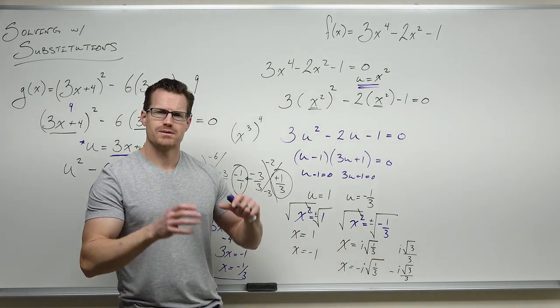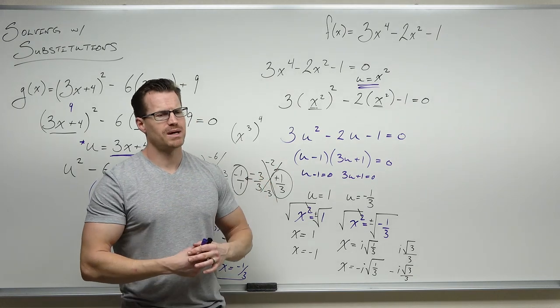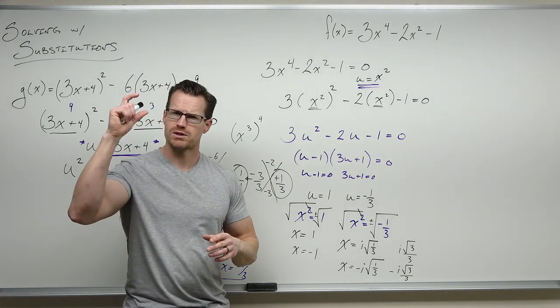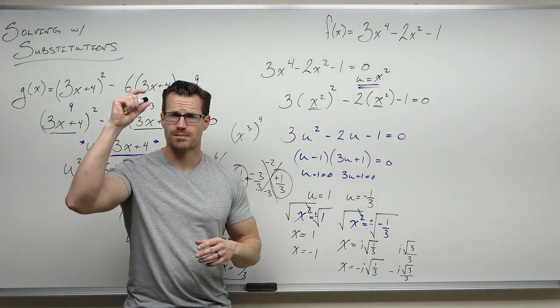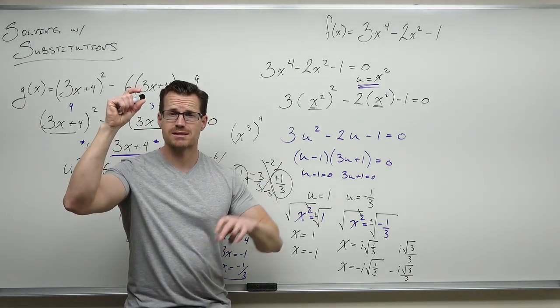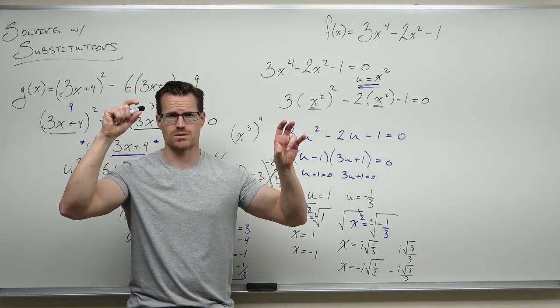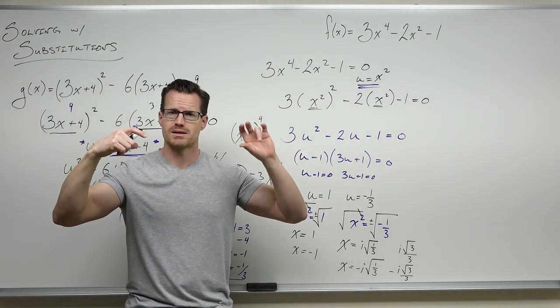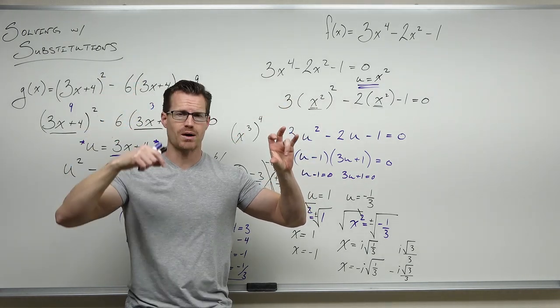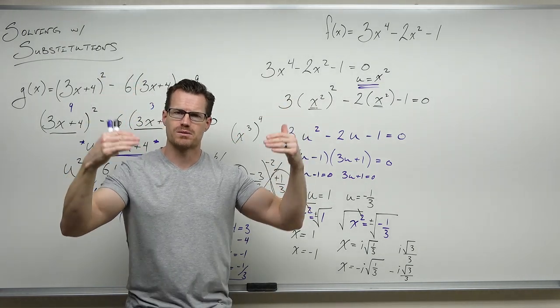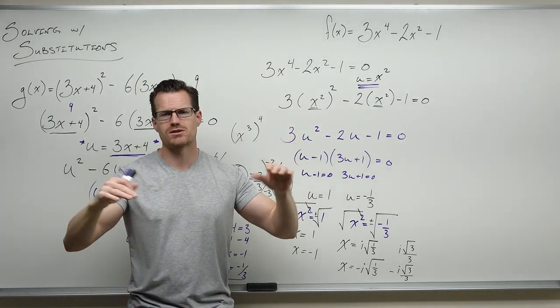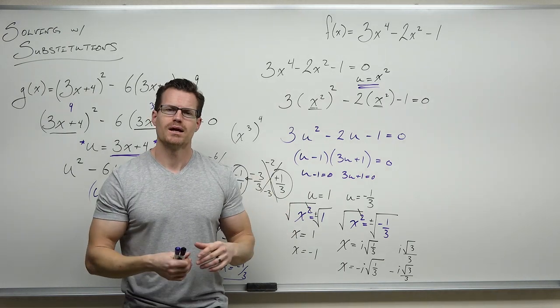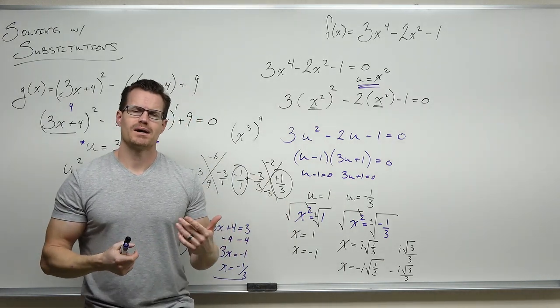So our process is: set equal to zero, make sure the first term has a power twice the second term, write it as the second term to the second power, make your substitution, factor it, and then get back out. Whatever the degree of your polynomial is, you should be able to factor it over complex numbers into that many solutions.